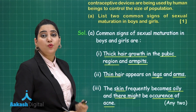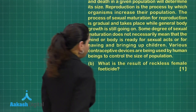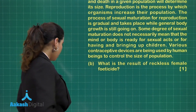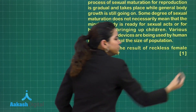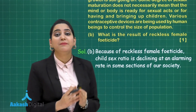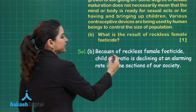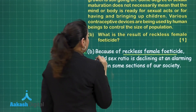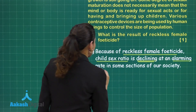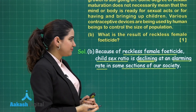Let us proceed to part B of question number 3, which asks: what is the result of reckless female feticide? Reckless female feticide not just disturbs the sex ratio of males and females but also impedes the health of the female. Because of reckless female feticide, the child sex ratio is declining at an alarming rate in some sections of our society. That is the result of reckless female feticide.